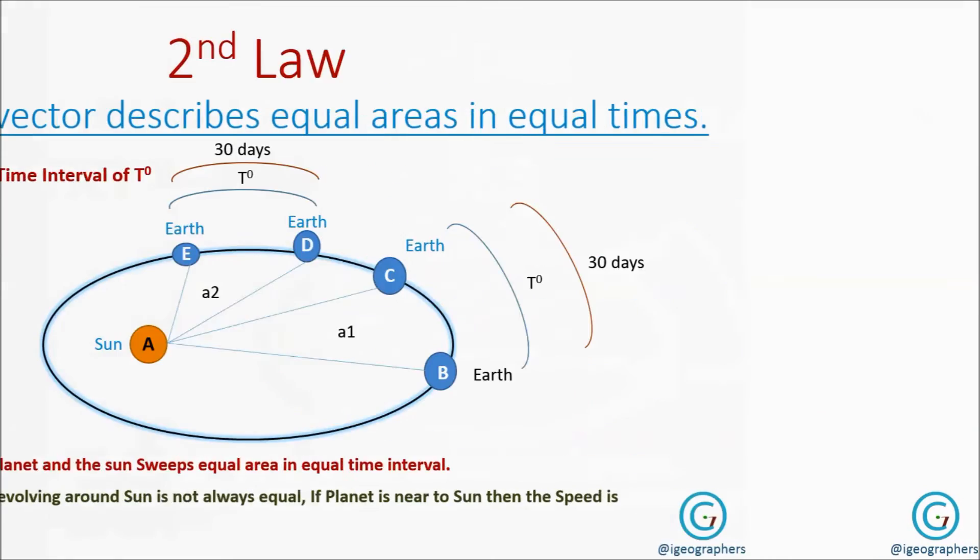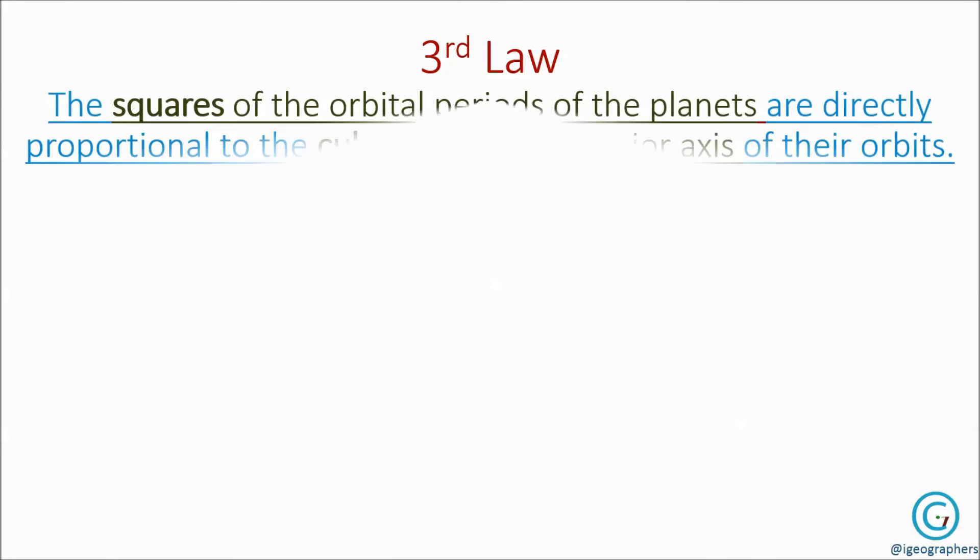Third law of planetary motion: the squares of the orbital period of planets are directly proportional to the cube of the semi-major axis of their orbits. The third law of planetary motion is also known as the harmonic law.